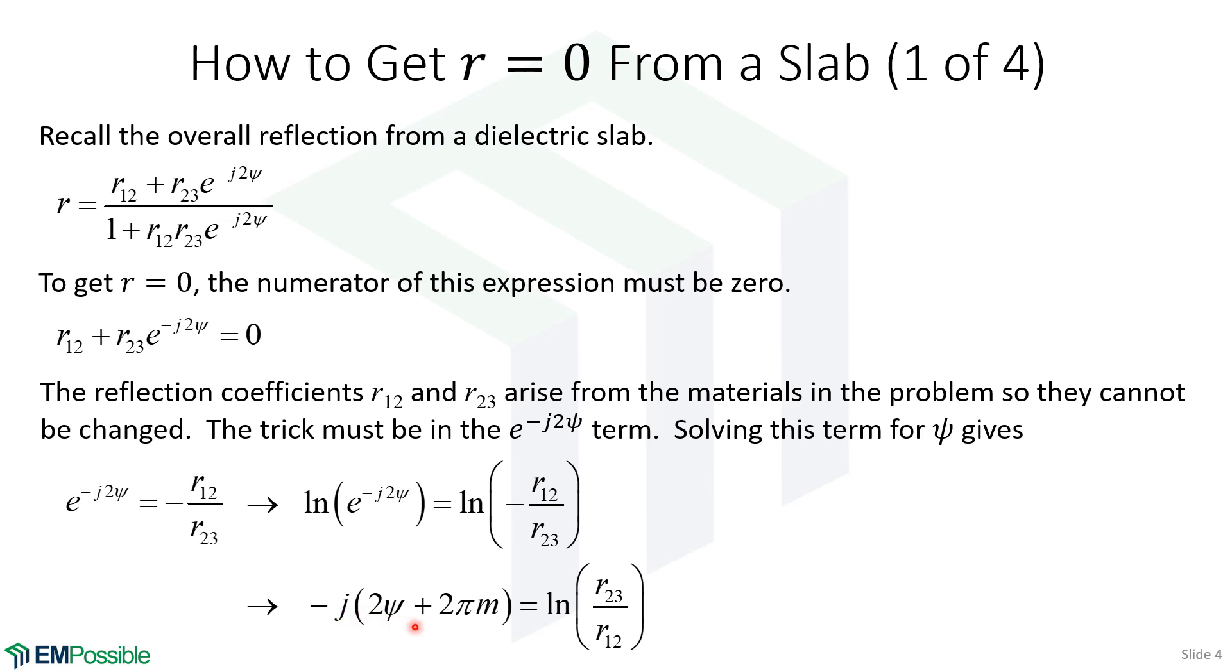yes, it's minus j2 psi, but to this 2 psi term, which is the phase, we have to add to that integer multiples of 2 pi. And so this M could be anything negative or anything positive in general. From there, we can now solve for the psi term, and we end up with this equation. But psi itself really isn't useful. We want to solve for the thickness of the layer.